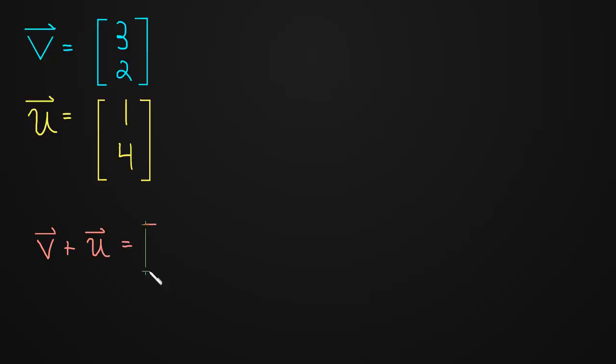So v plus u is simply going to be, we take the two vectors and add them. I'm writing out every step here. How do we do this? Well, we just add their corresponding components together. So the first component of v plus u is just the first component of v, which is 3, plus the first component of u.